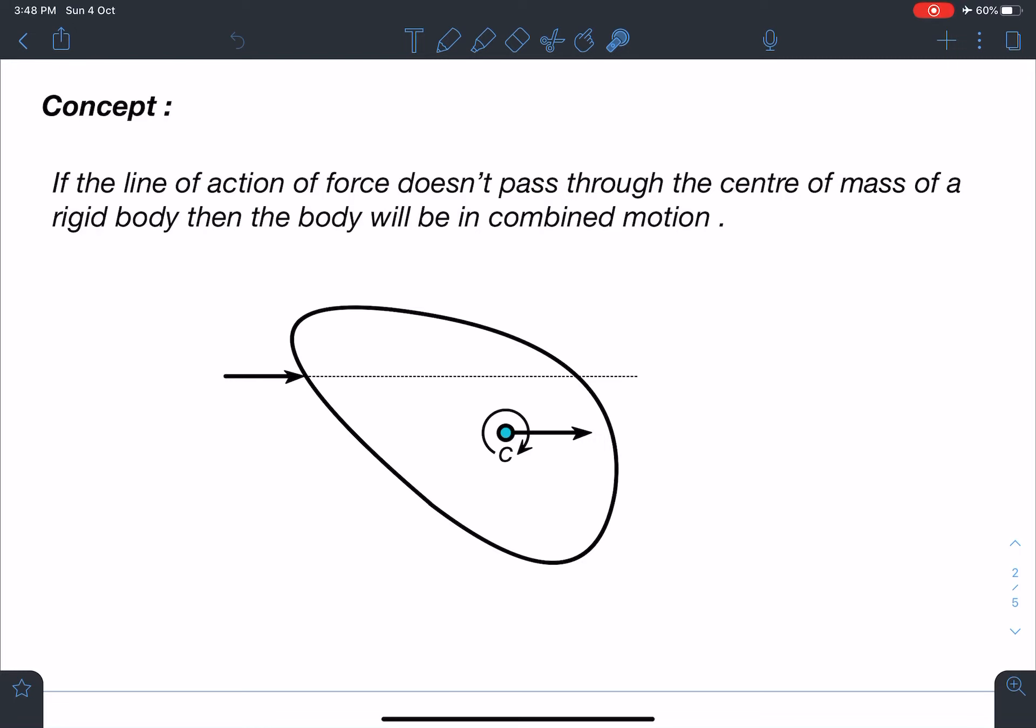The body will be rotating with some angular acceleration alpha, which I have shown here in the diagram. The applied force's line of action is not passing through the center of mass, so it is translating as well as rotating. Let's apply this logic here.